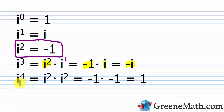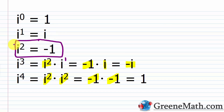For i to the fourth power, I break it up as i squared times i squared. By the rules of exponents, 2 plus 2 is 4, so nothing illegal there. We know i squared by definition is negative 1, so replacing both gives negative 1 times negative 1, which is positive 1. So write these down: i to the first power is i, i squared is negative 1, i cubed is negative i, and i to the fourth power is 1. Those four are all we need.